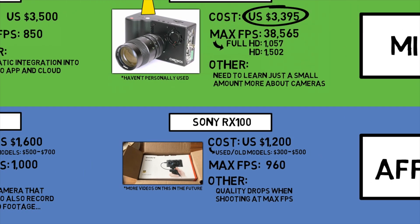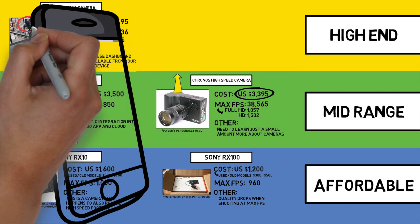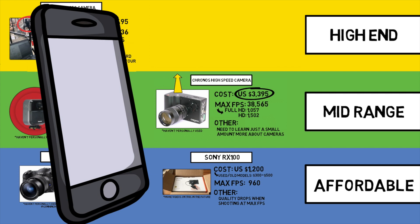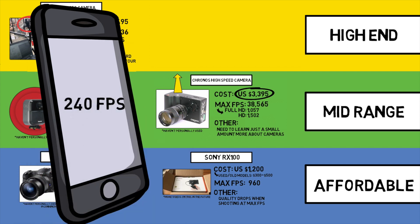There is one camera I'm leaving off that nearly everybody has access to, and that's your phone. With the latest iPhone able to take high-speed footage up to 240 frames per second, there's no excuse not to be using this resource to help get your pitchers better.